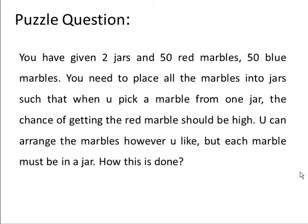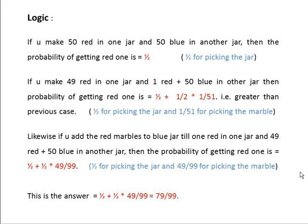The jars such that when you pick a marble from any jar, the chance of getting the red marble should be high. The condition is you can arrange the marbles however you like, but each marble must be in one of the jars. How can this be done? The logic is simple.